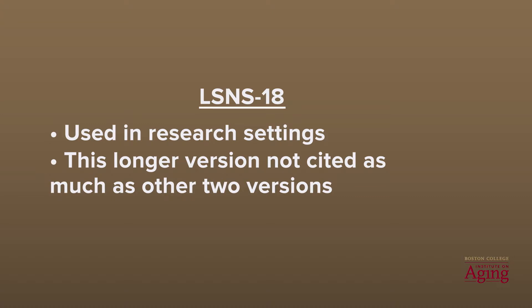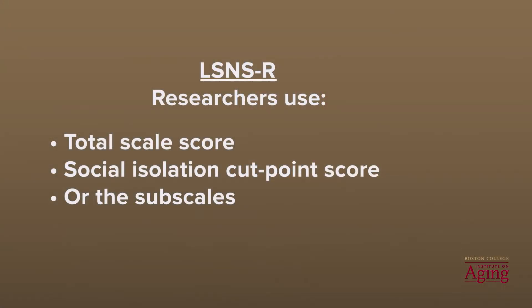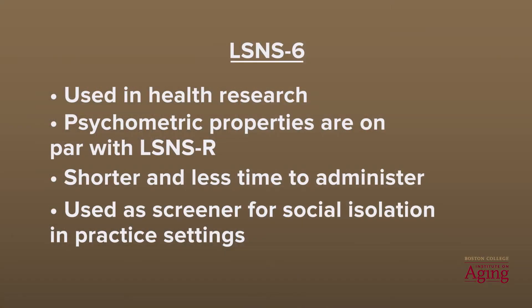The LSNS-18 is often used in research settings where people may want to understand more about neighbors and the role they may play. This longer version has not been cited as much as the other two versions. Social researchers tend to use the LSNS-R, which has two clear factors — kinship and friendship ties — and holds up well across a wide array of studies. Sometimes researchers use the total scale score, sometimes the social isolation cut point score, and sometimes the subscale scores. The LSNS-6 is particularly gaining a great deal of use in health research, in part because its psychometric properties are on par with the LSNS-R, and it is shorter and therefore takes less time to administer.